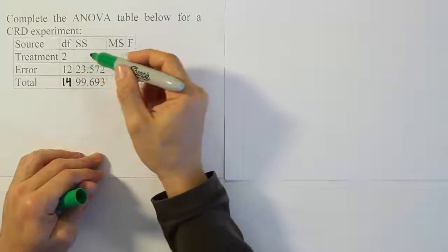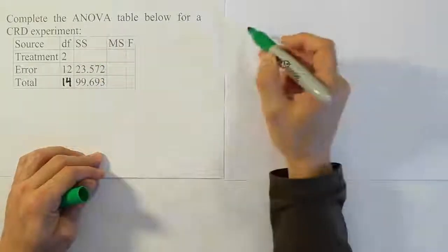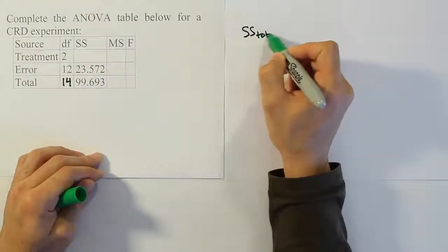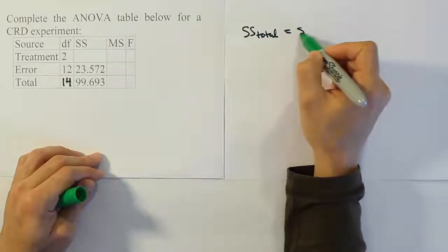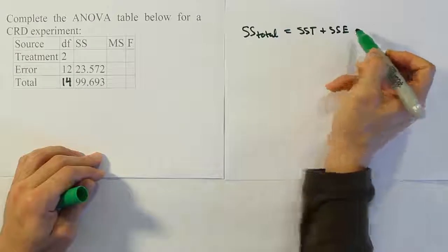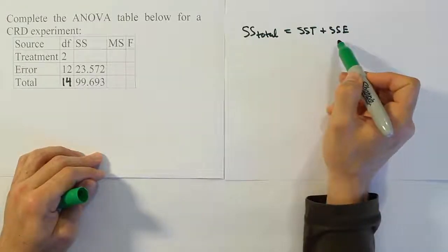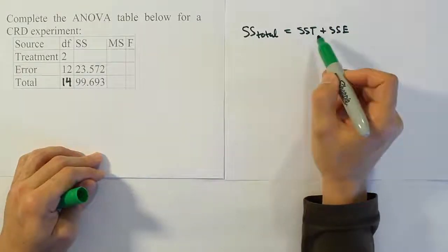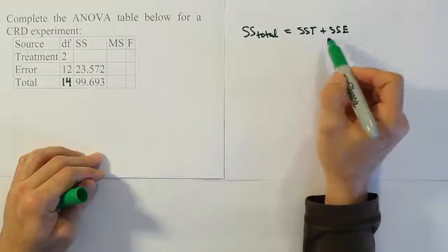Now, from here, we're missing SST, so we want to remember this relationship that the total sum of squares is equal to SST plus SSE. So, if I know SSE and SSTotal, I can solve for SST, which is what I'm missing.